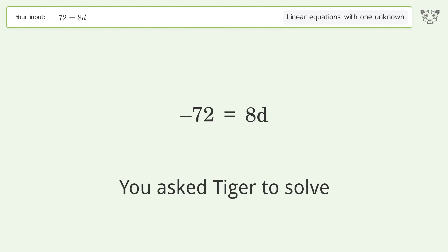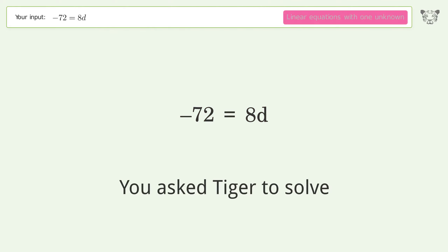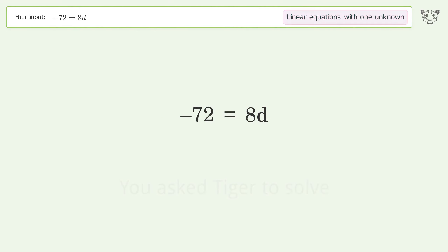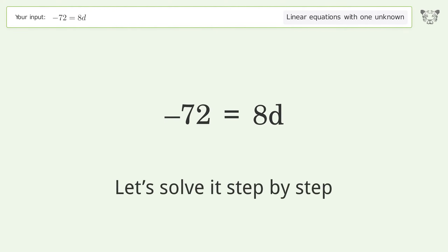You asked Tiger to solve. This deals with linear equations with one unknown. The final result is d equals negative 9. Let's solve it step by step.